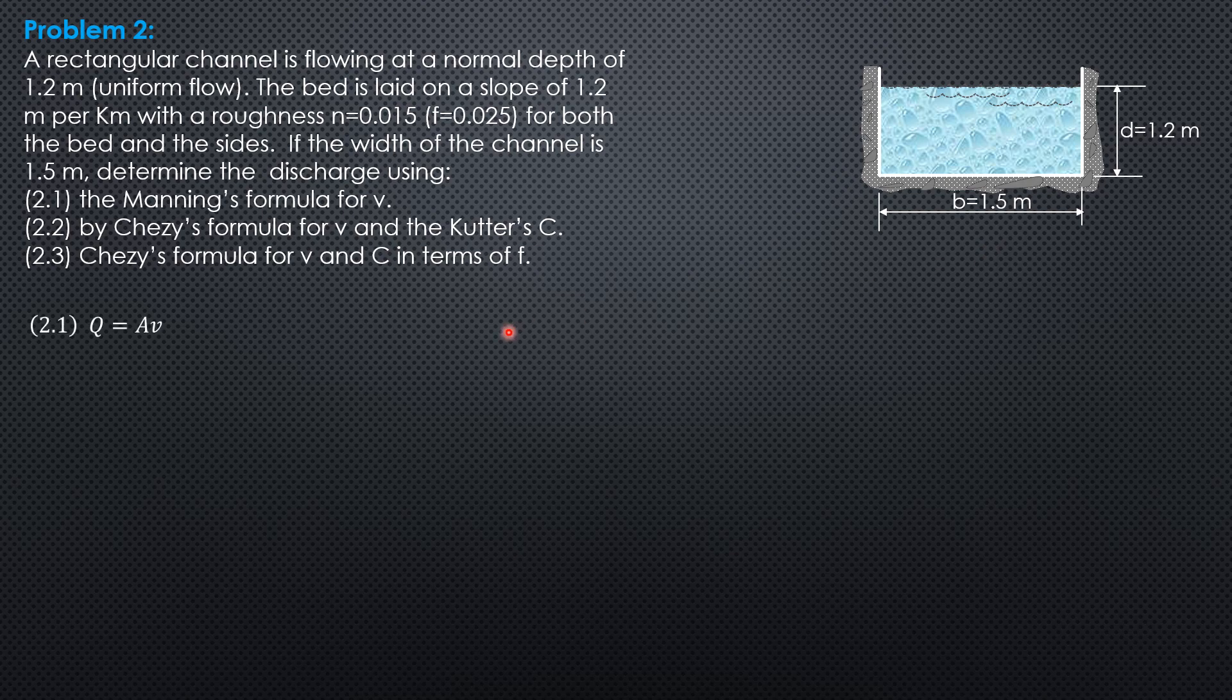Then the discharge is area times V, area over N, hydraulic radius to the 2 thirds, to the 1.5 by Kutter's, Manning's formula.